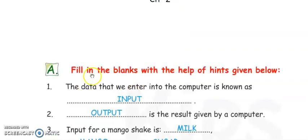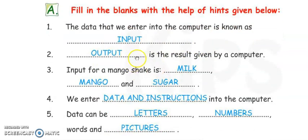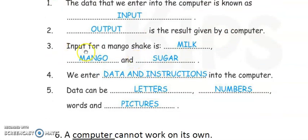Exercise A, fill in the blanks. Number one: The data that we enter into the computer is known as input. Number two: Output is the result given by a computer. Number three: Input for a mango shake - if you want to make mango shake, what things we want for input? Milk, mango, and sugar. These are the inputs for mango shake.